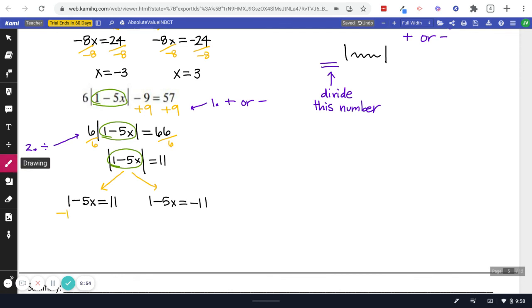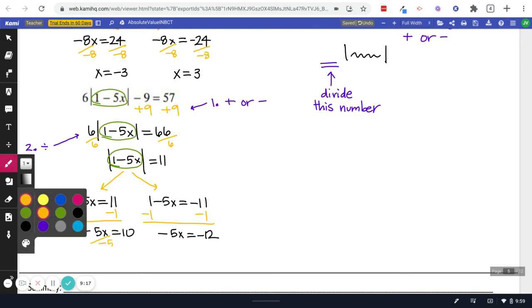And we can solve that. Subtract our 1. What's cool is the plus or minus and divide process has kind of been the same that we've done in all of our two-step equations. Oh, there we go. Negative 5x equals 10. Negative 5x equals negative 12. Divide by negative 5. Divide by negative 5.